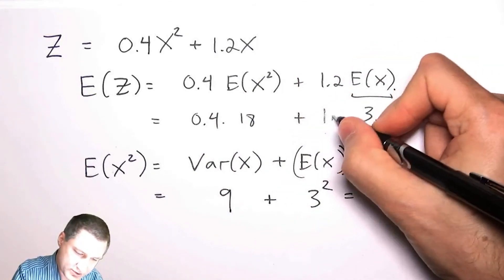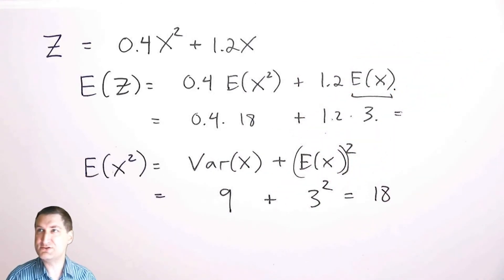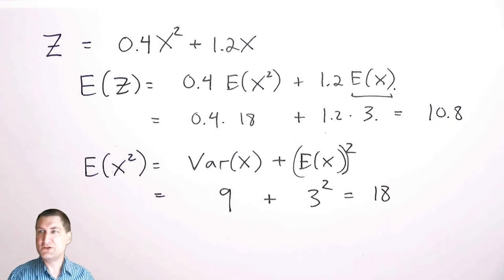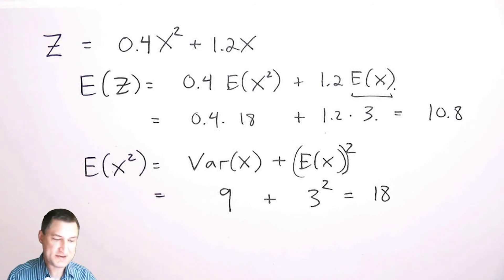The answer turns out to be 10.8. So you can see that when you're just messing around with the things you already know, these expected value problems can be pretty quick.